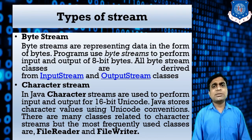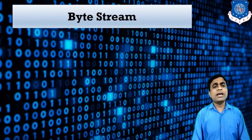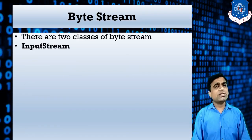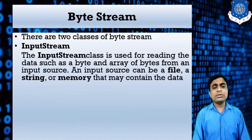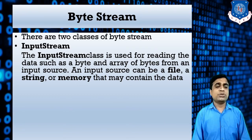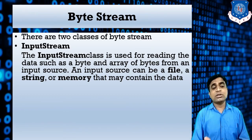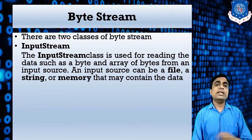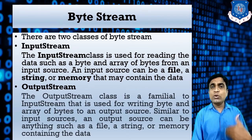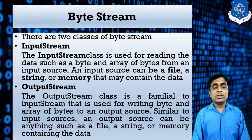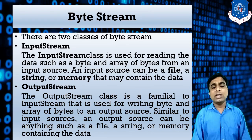Let's explain byte stream in detail. There are two main classes in byte stream: the first is InputStream and the second is OutputStream. Using InputStream, you can read data such as a byte or array of bytes from an input source — which can be a file, a string, memory, or anything. Similarly, OutputStream is used for writing a byte or array of bytes to the output destination.